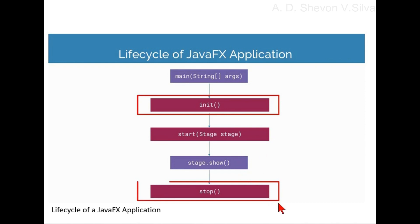Public void stop — this method is called when the application should stop, and provides a convenient place to prepare for application exit and destroy resources.